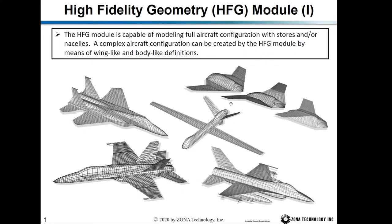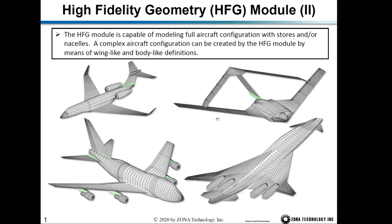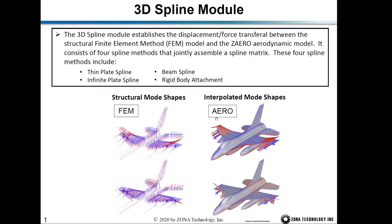The high-fidelity geometry module can model very complex aircraft configurations, as shown here. The 3D spline module establishes the displacement and force transfer between the structure finite element model and the ZAERO aerodynamic panel model.